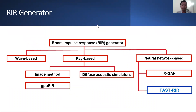The room impulse response generators developed over decades can be divided into three categories: wave-based techniques, ray-based techniques, and neural network-based techniques. Wave-based approaches give accurate results by solving wave equations. However, wave-based techniques are only feasible for generating room impulse responses for less complicated scenes at low frequencies, because the complexity of wave-based techniques grows as the fourth power of frequency. Ray-based approaches are a less accurate alternative, because the wave nature of sound is neglected.